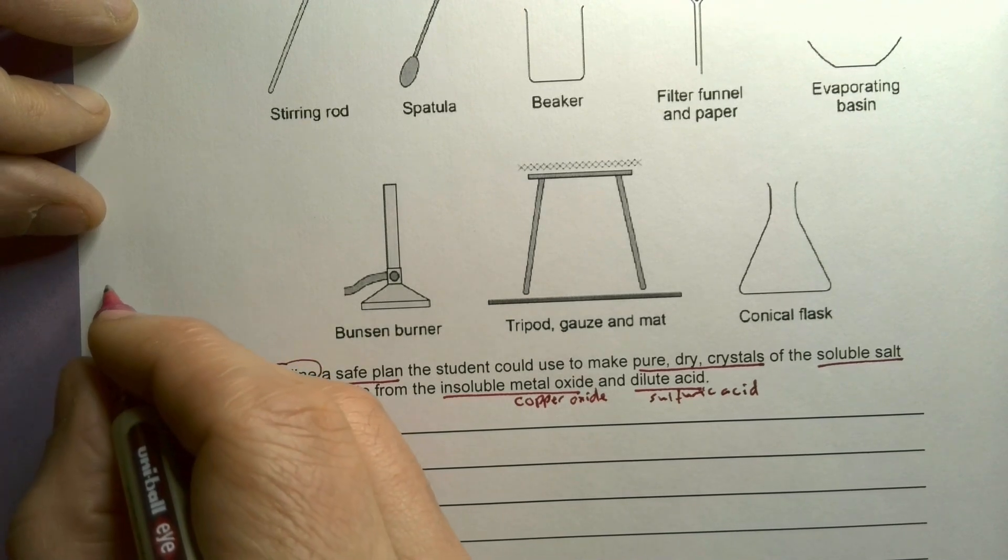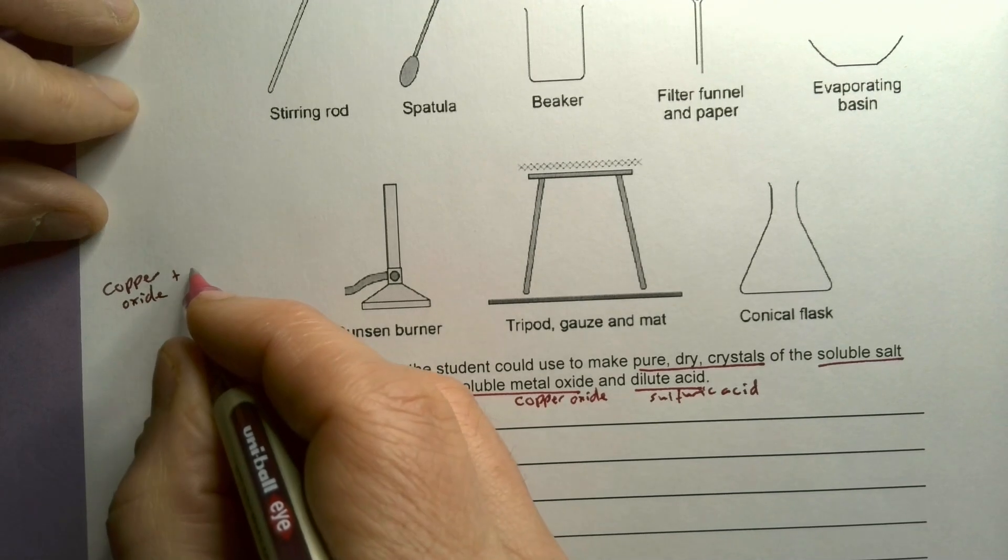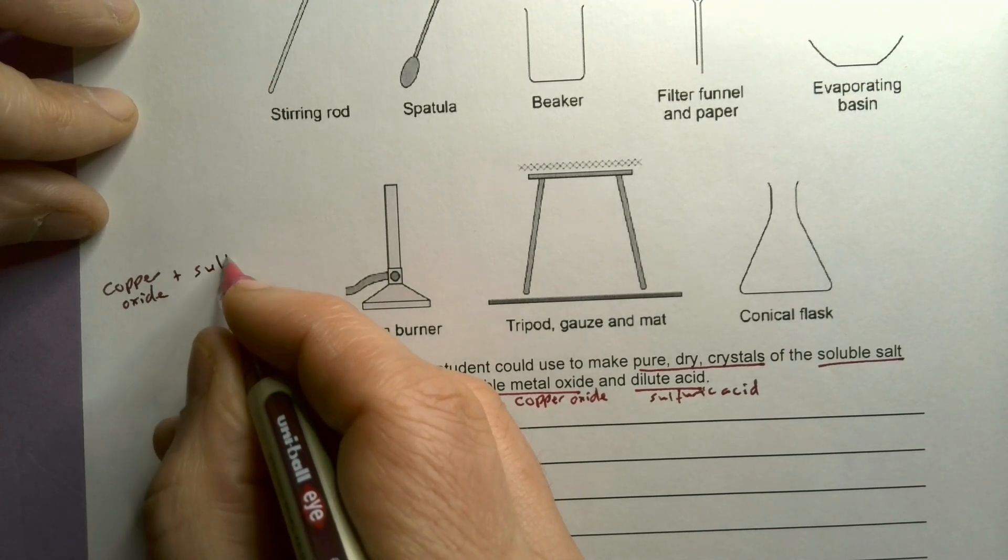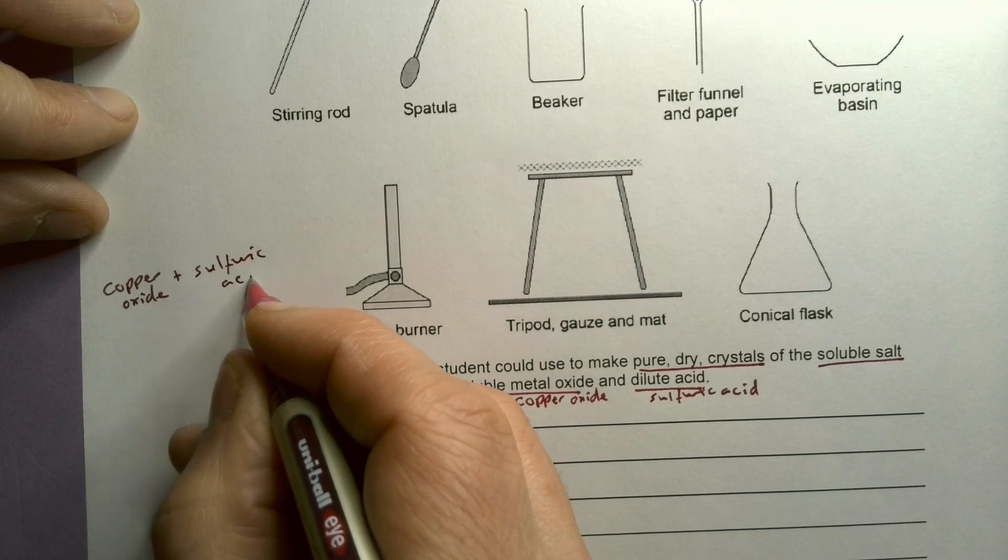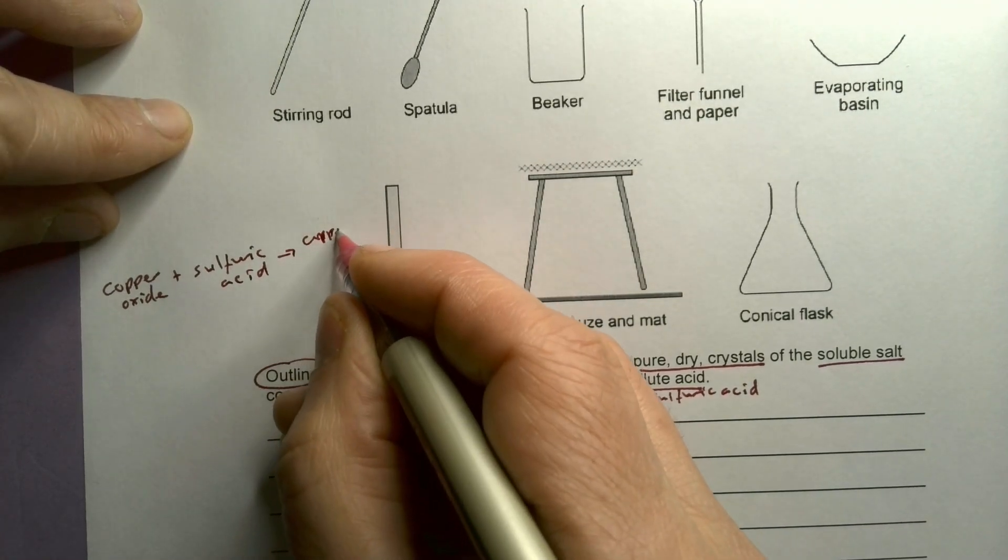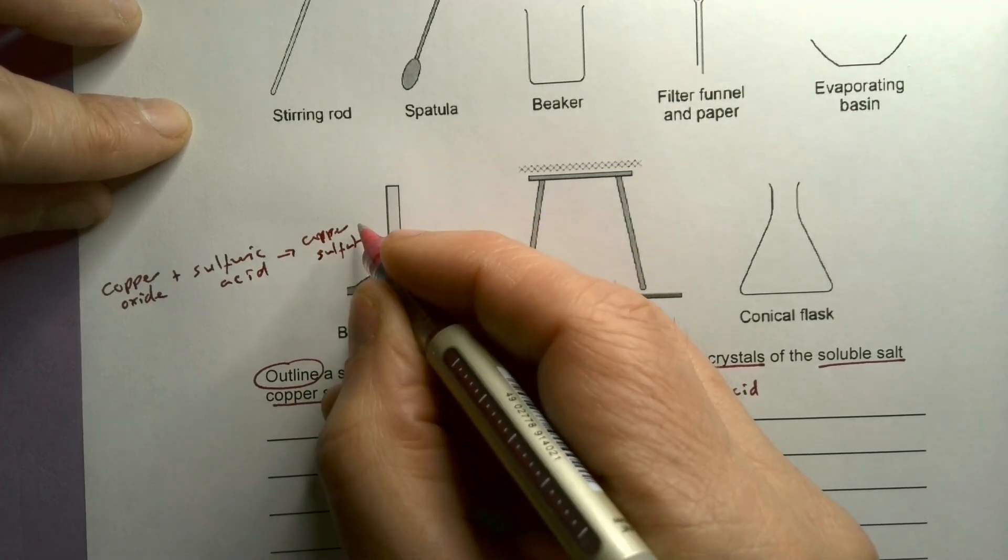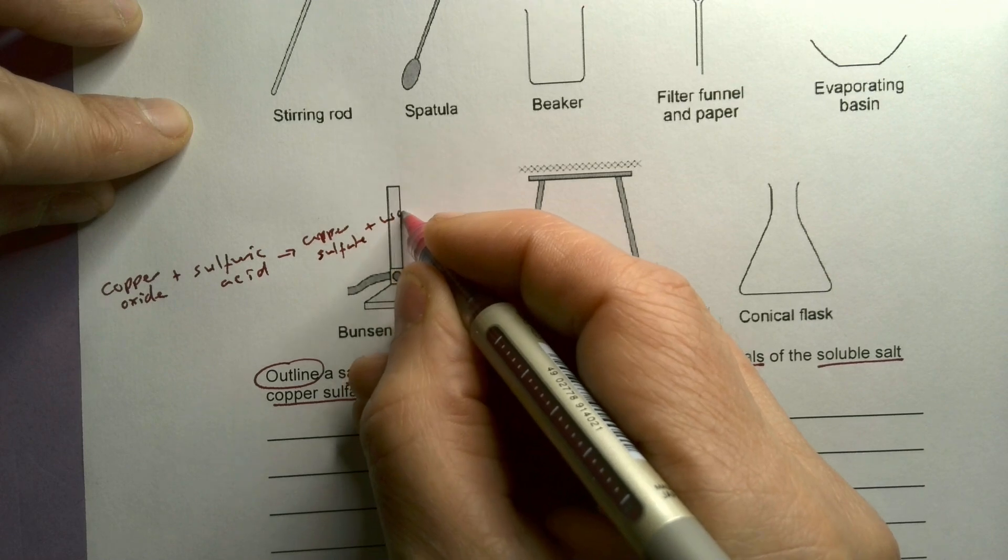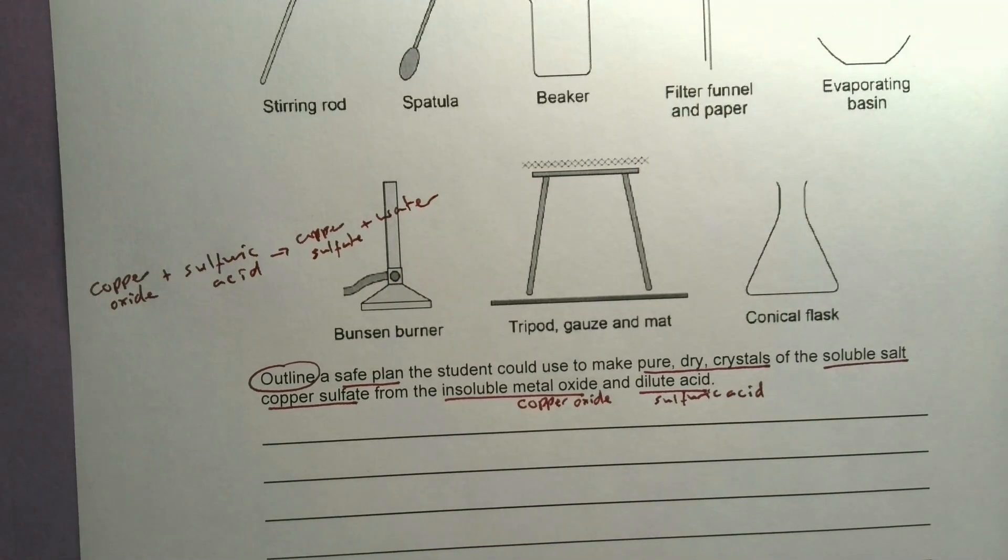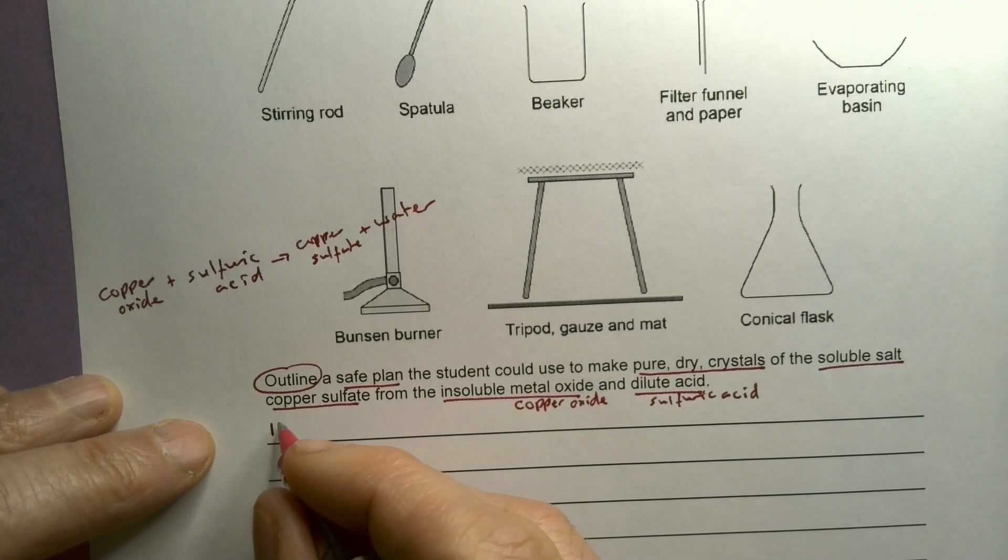I know that copper oxide plus sulphuric acid will make copper sulphate, which is what I want. But it will also make water. Okay, so I'm going to end up with that. So I'm going to use, instead of using bullet points here, I'm going to use numbers.